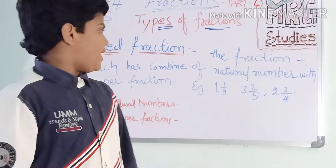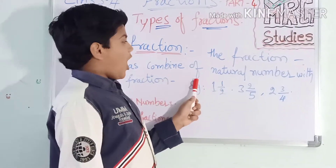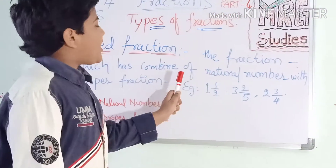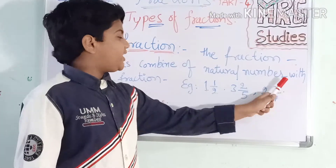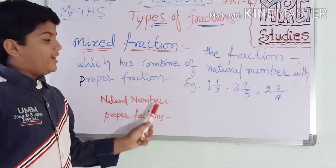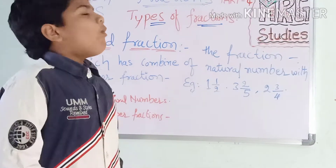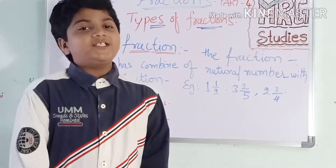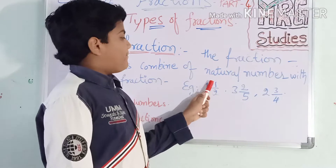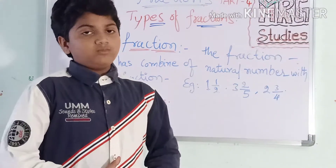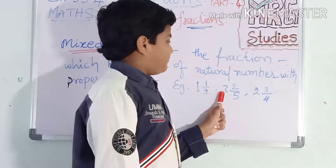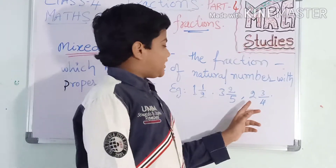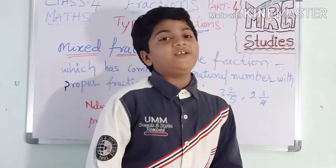A mixed fraction is a combination of a natural number with a proper fraction. What is a mixed fraction? Let me give examples. See: one and one-half, then three and two-fifths, then two and three-fourths. These are examples of mixed fractions.